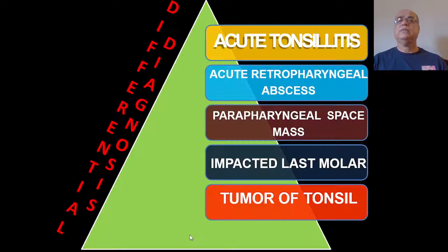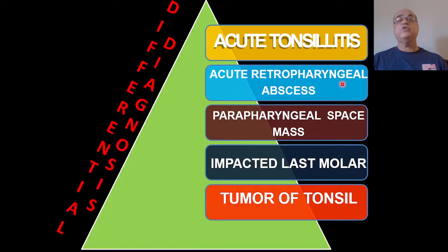In the differential diagnosis, at the top of the list is acute tonsillitis — but in acute tonsillitis both tonsils are congested and the congestion is limited to the tonsils, whereas in peritonsillar abscess the congestion extends to the adjacent soft palate and uvula. Other differentials include acute retropharyngeal abscess, parapharyngeal space mass or parapharyngeal abscess, impacted last molar tooth, and tumor of the tonsils.